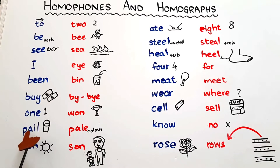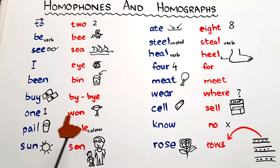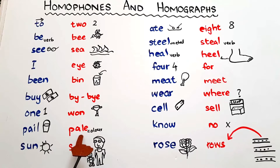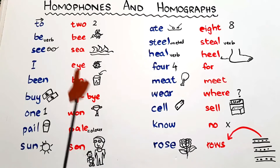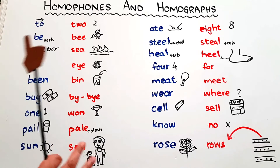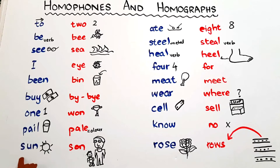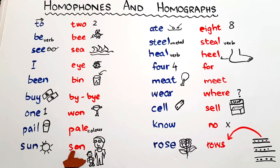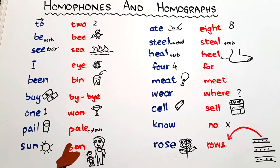'Pail' — a bucket used for water — and 'pale', a color that is a very light shade, mostly used for skin color, as in 'your skin is pale'. Then we have the very common word 'sun', S-U-N, and 'son', S-O-N, as in 'like father, like son'. Different meanings, different spellings, but same pronunciation.